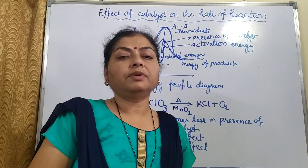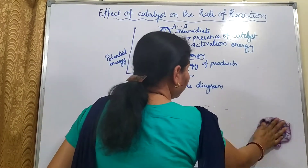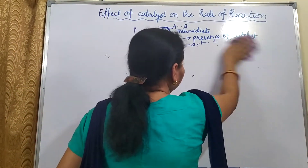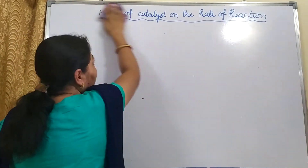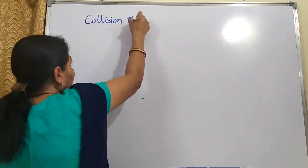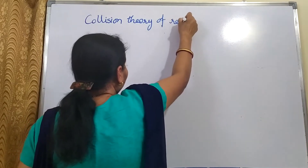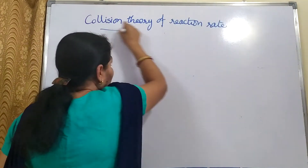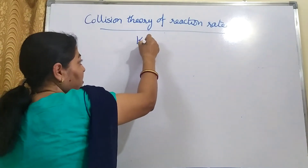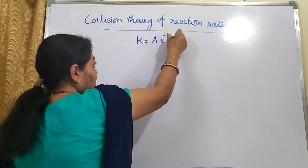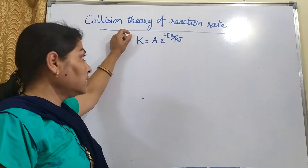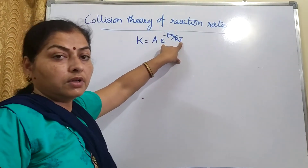The last theory of the chapter is the collision theory of rate of reaction. Earlier we have seen the temperature dependence of rate of reaction — that theory was given by Arrhenius, with the mathematical expression K = A × e^(−Ea/RT). This expression gives us the dependence of the rate constant on the temperature at which the reaction is carried out.